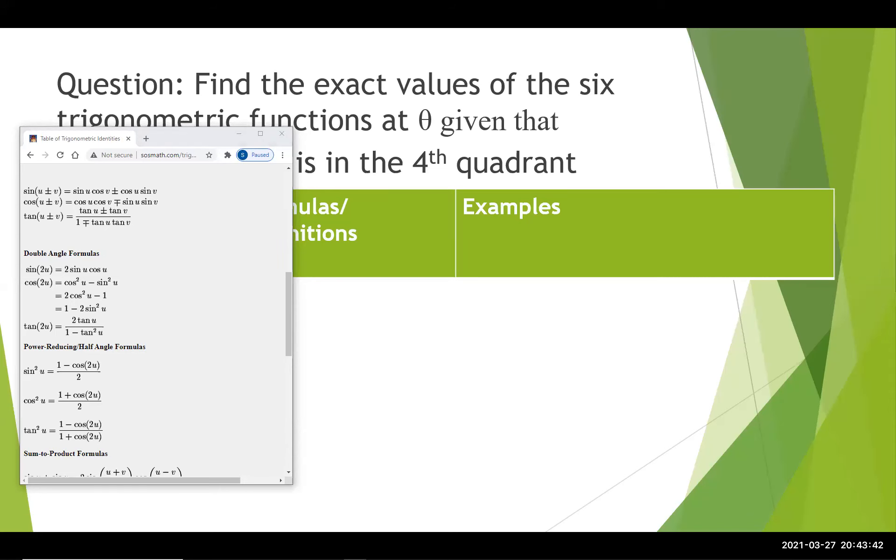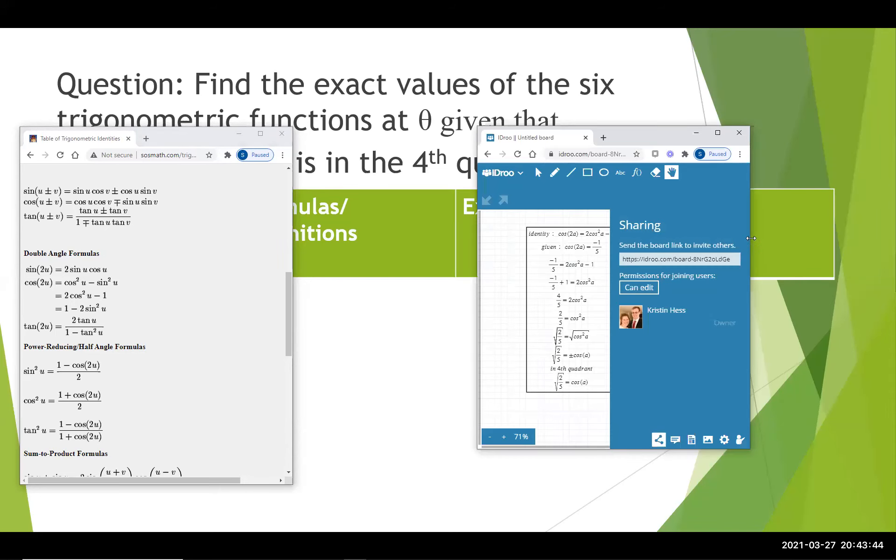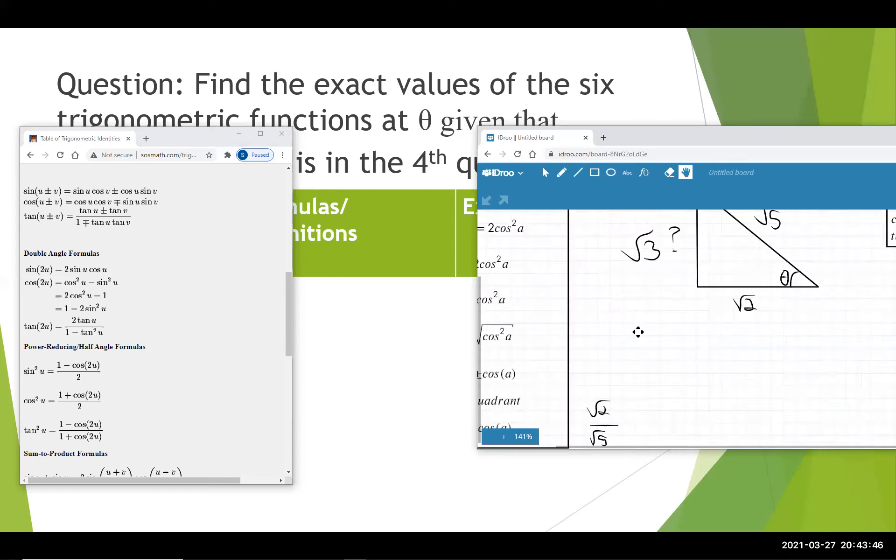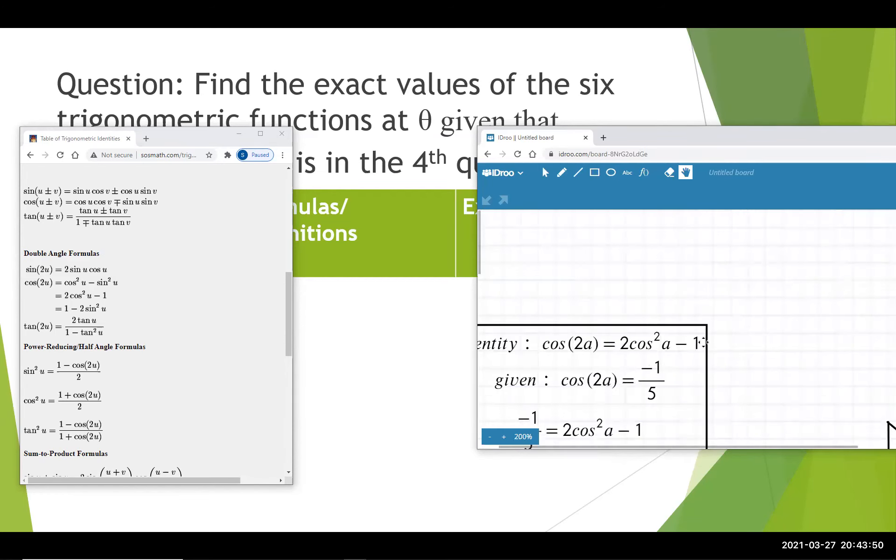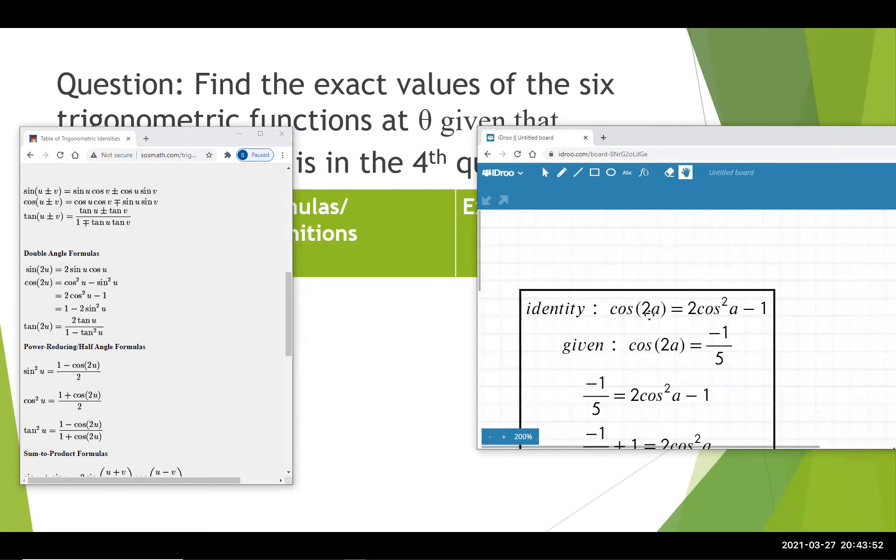So I started by writing what the identity is I'm going to use. I'm going to use this identity of cosine of 2a. I'm going to put a, this is easier to type, is equal to 2 cosine squared of a minus 1. And the given information is cosine of 2a is equal to negative 1 fifth.